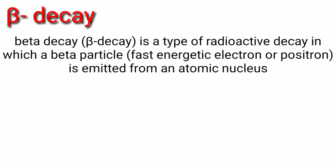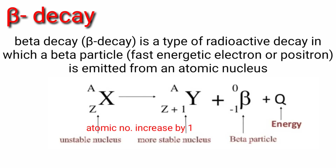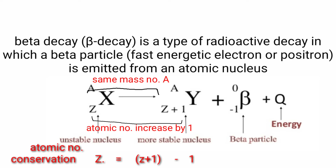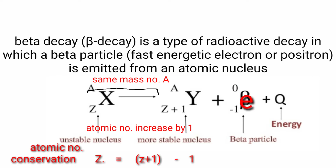Next is beta decay. Beta decay is a type of radioactive decay in which a beta particle — which is a fast energetic electron or a positron — is emitted from an atomic nucleus. In the general nuclear reaction for beta decay, the X nucleus emits a beta particle, the atomic number increases by 1, and the atomic mass remains the same. The beta particle is denoted as a fast energetic electron.